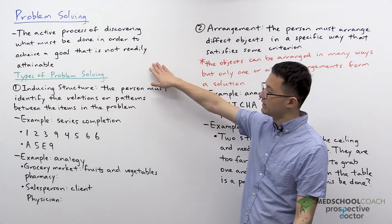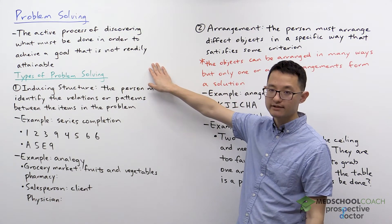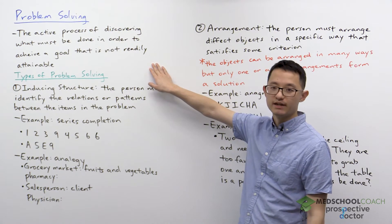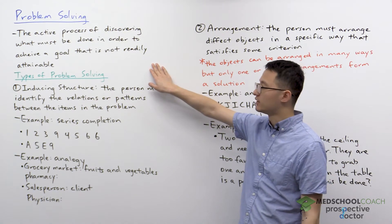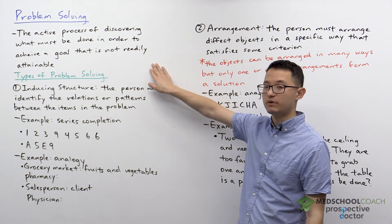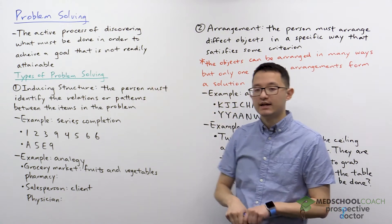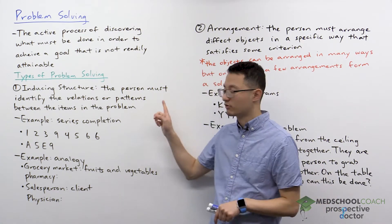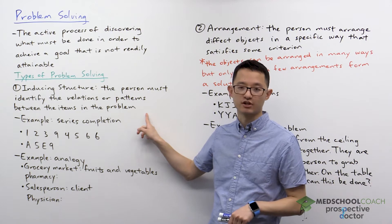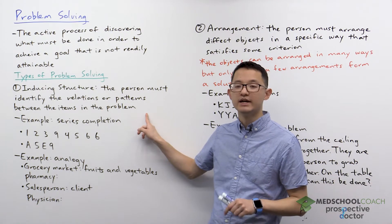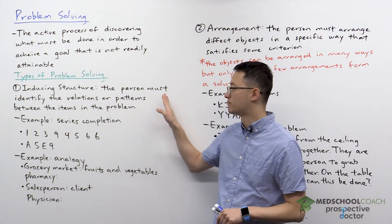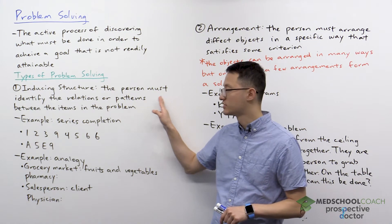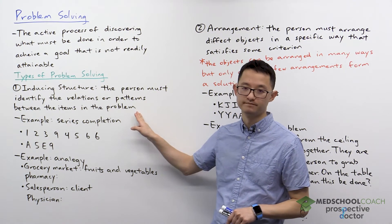Problem solving is the active process of discovering what must be done in order to achieve a goal that is not readily attainable. There are several different types of problem solving. The first type we're going to discuss is inducing structure.